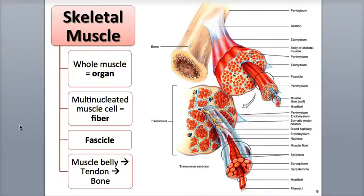In addition to the muscle fibers, whole muscles also contain other tissues, like epithelial tissues, connective tissues, and nervous tissues, which together make up the whole muscle — which is an organ made up of these diverse collections of tissue types.